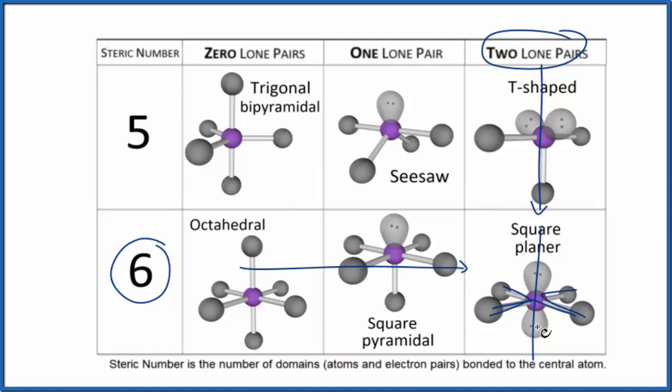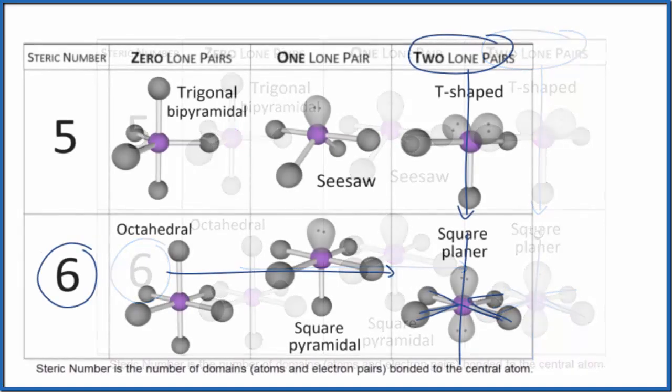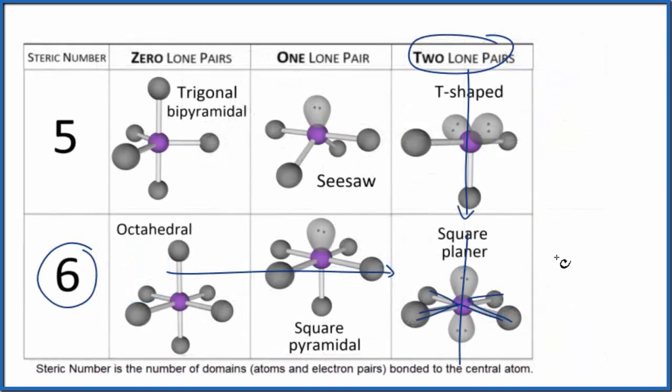There is one other way we could do this. We could use what's called the AXN notation. For the AXN notation, A is the central atom - that's the chlorine. X is the number of atoms bonded to that central atom. We have four fluorine atoms.